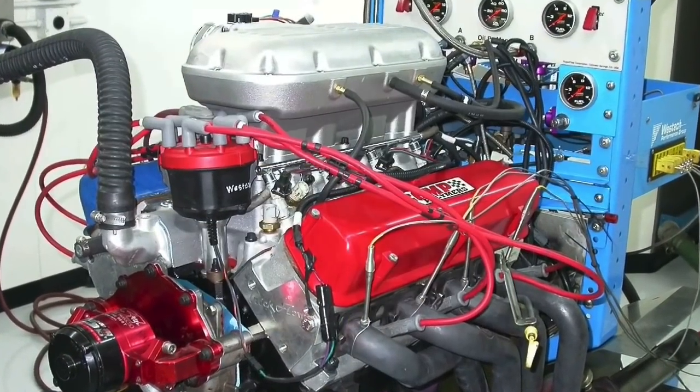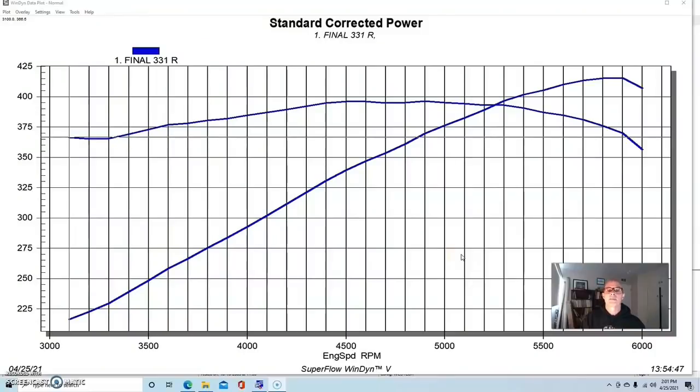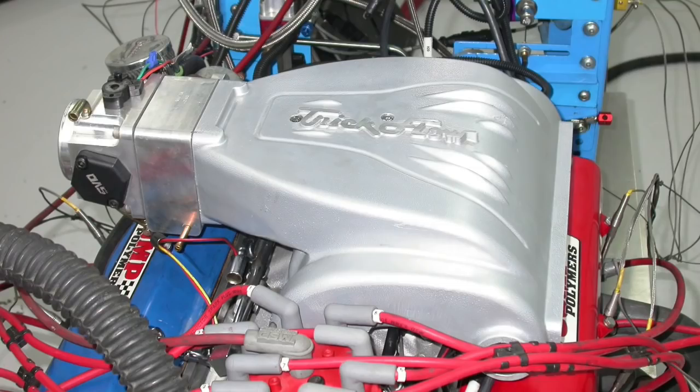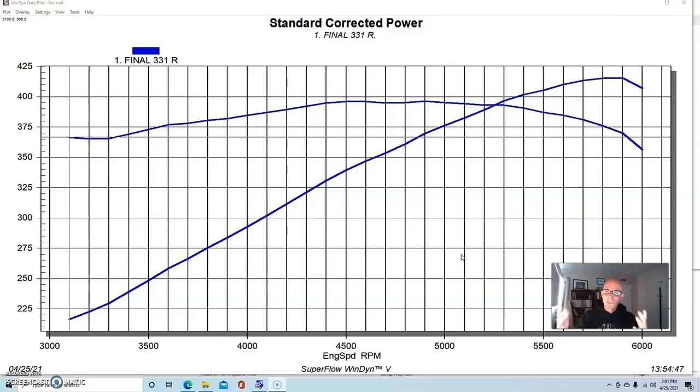Our first test of the Trick Flow TFS Box R intake manifold came as a comparison to their standard TFS R intake manifold. Now I've run the TFS R intake manifold a number of times and it's never really done as well as I think it should have. I've compared it once to this Box R intake manifold. Normally when we see a shorter runner, which the Box R definitely is compared to the R manifold, we see a standard kind of thing happen. The longer runners make more power down low and then the shorter runners make more power up top. And that's exactly what we expected here, but that's not what happened.